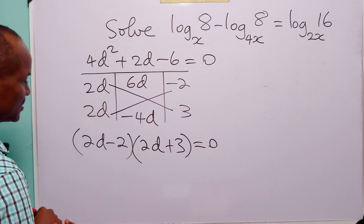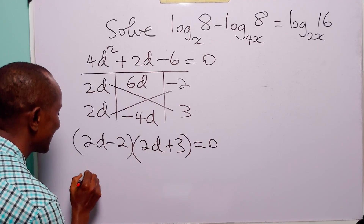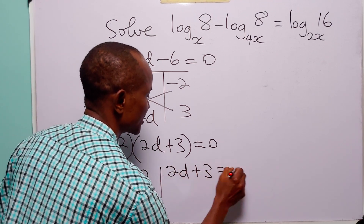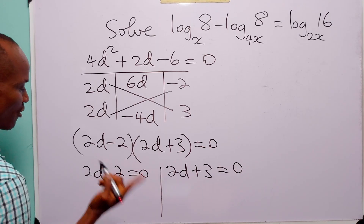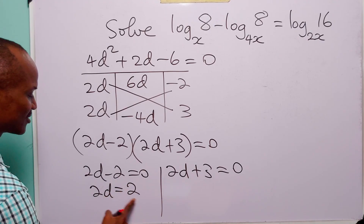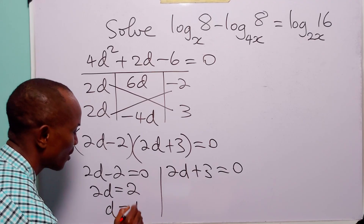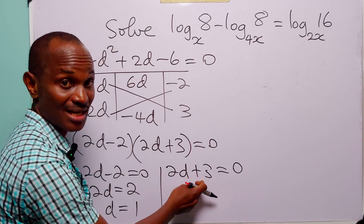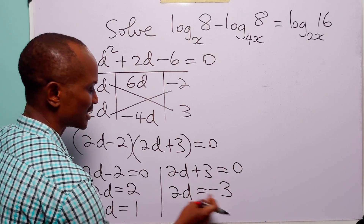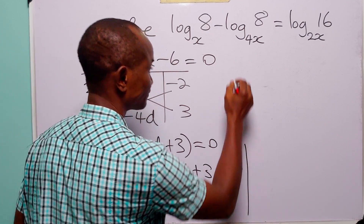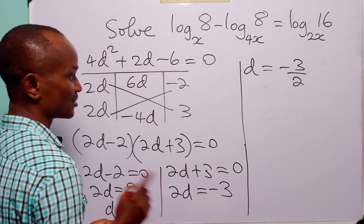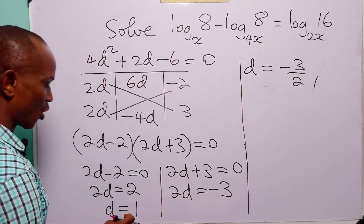Setting each factor equal to zero: either 2d − 2 = 0, giving 2d = 2 so d = 1; or 2d + 3 = 0, giving 2d = −3 so d = −3/2. Therefore d = 1 or d = −3/2.